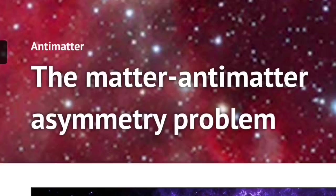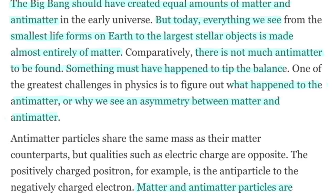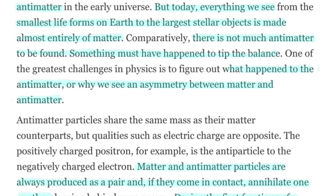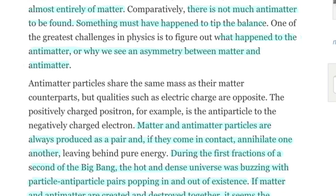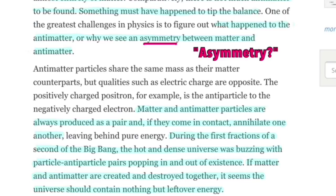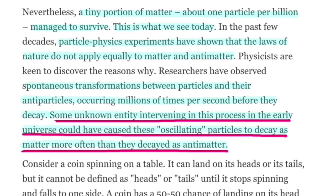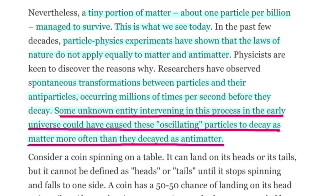Let's check out what CERN says on their website about the antimatter symmetry problem. The Big Bang should have created equal amounts of antimatter and matter, but today everything we see — from the smallest lifeforms on Earth to the largest stellar objects — is made almost entirely of matter. There's not much antimatter to be found. Something must have happened to tip the balance. Matter and antimatter particles are always produced as a pair, and if they come in contact, they annihilate one another. During the first fractions of a second of the Big Bang, the hot and dense universe was buzzing with particle-antiparticle pairs popping in and out of existence. A tiny portion of matter, about one particle per billion, managed to survive, and particle physics experiments have shown that the laws of nature do not apply equally to matter and antimatter.